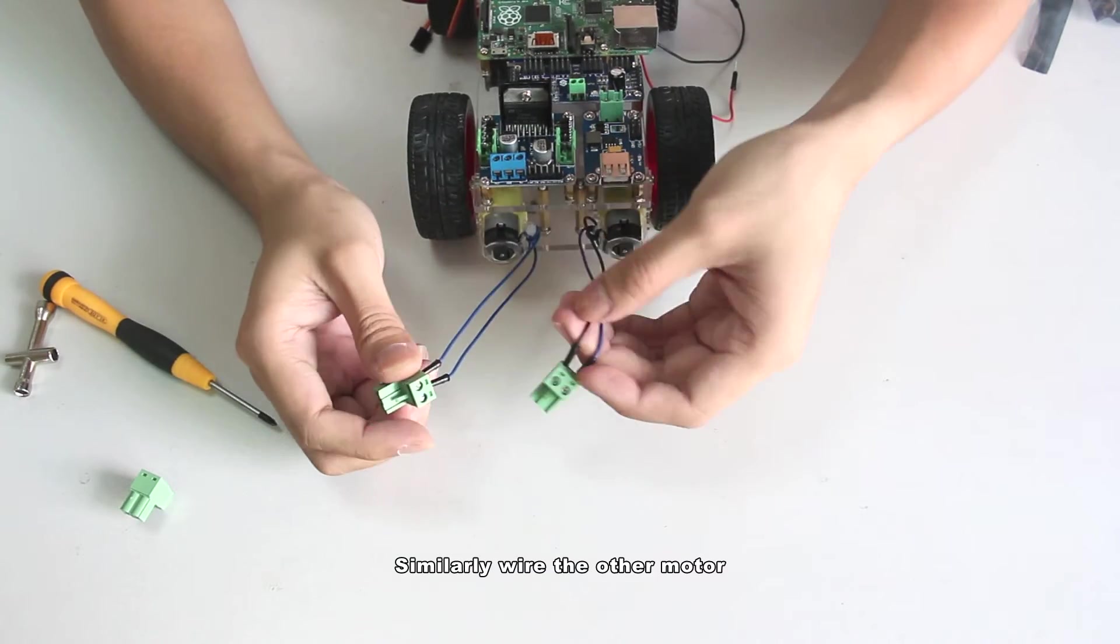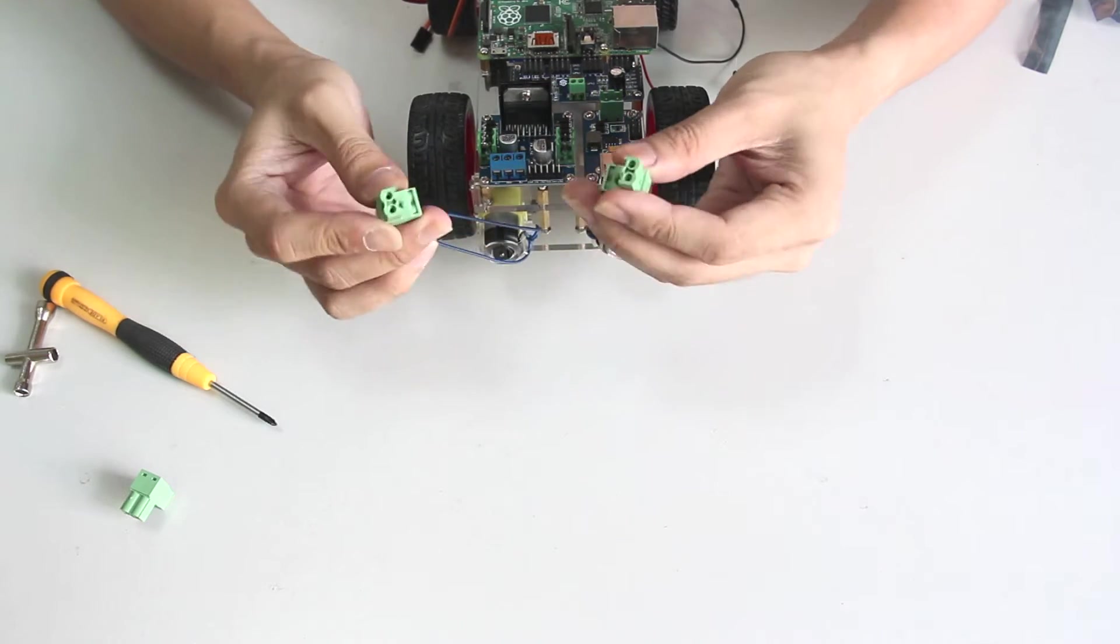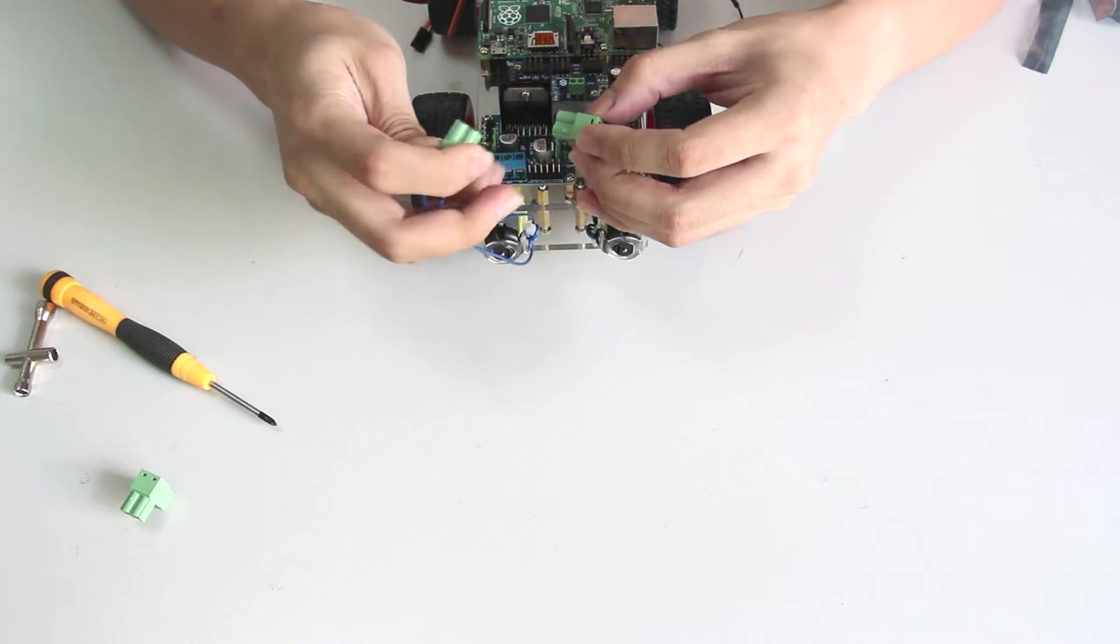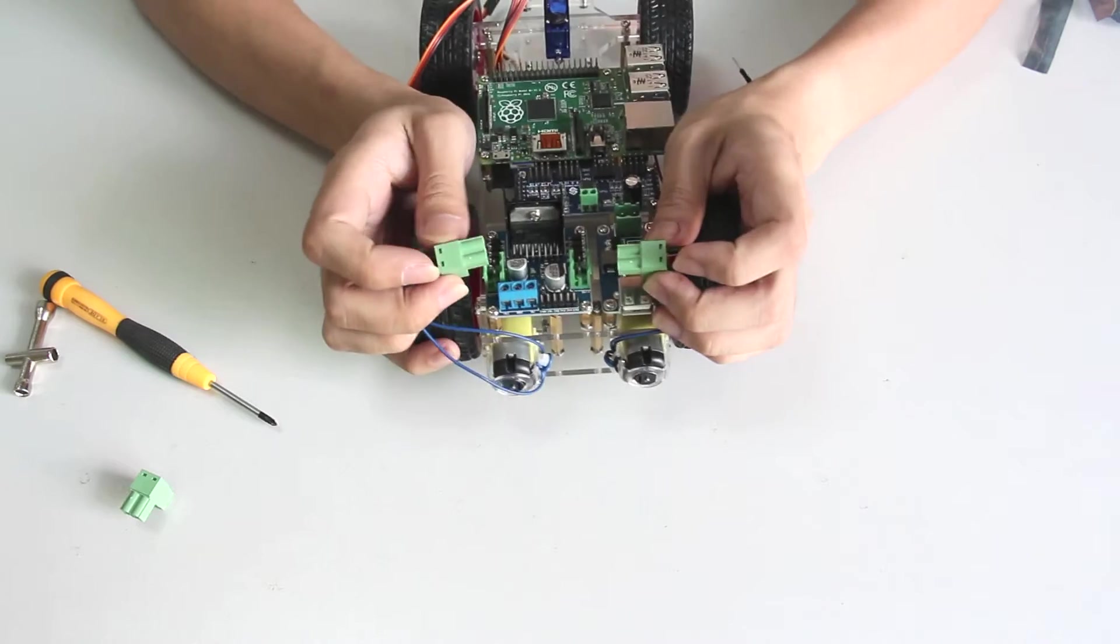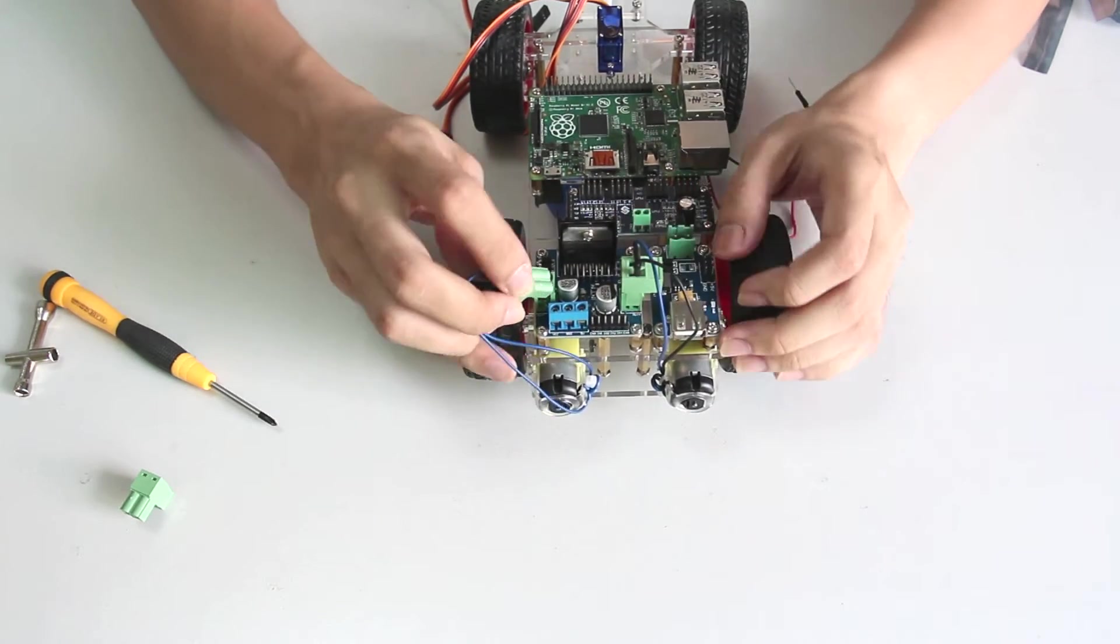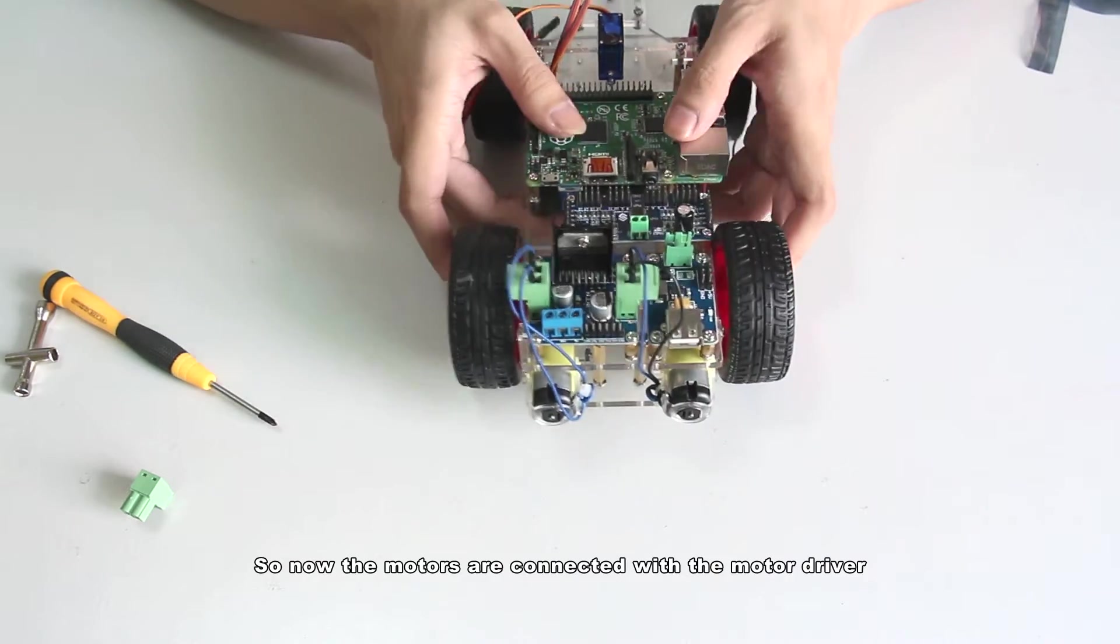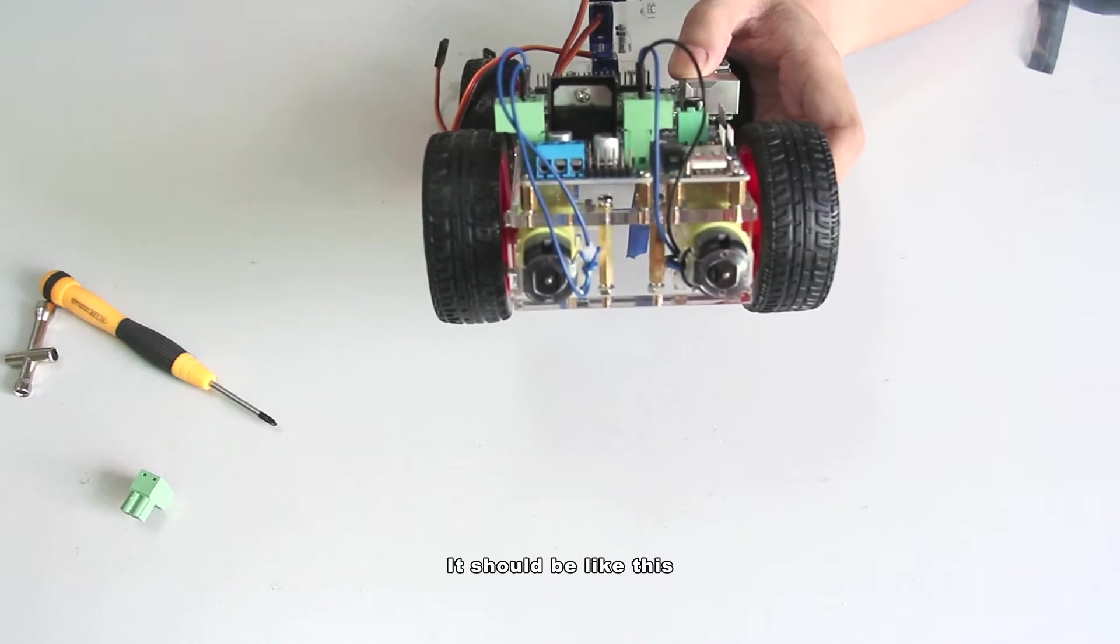Similarly wire the other motor. Plug the connectors back to the driver. So now the motors are connected with the motor driver. It should be like this.